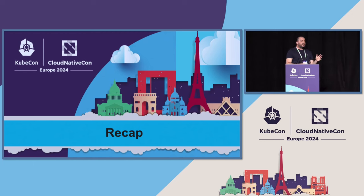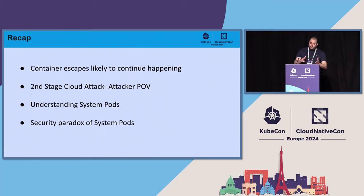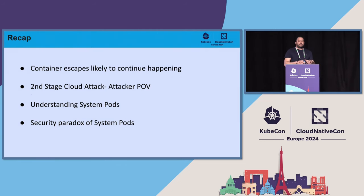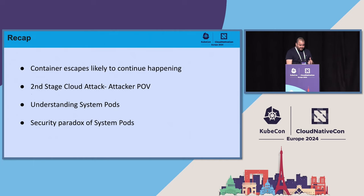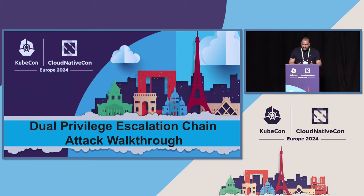That was a lot of information in a very short time, so let's do a short recap. We talked about container escape that will unfortunately continue to happen, and emphasized the importance of shifting focus to the second-stage attack — what happens after container escape occurs. Then we dove into the critical role of system pods in Kubernetes, and talked about the security paradox: with great power comes great responsibility. Now that we're all aligned, we can move on to the exciting part of the talk — the dual privilege escalation chain.